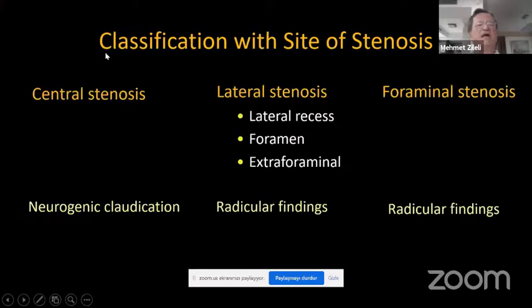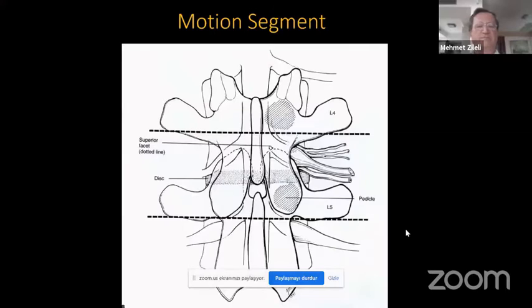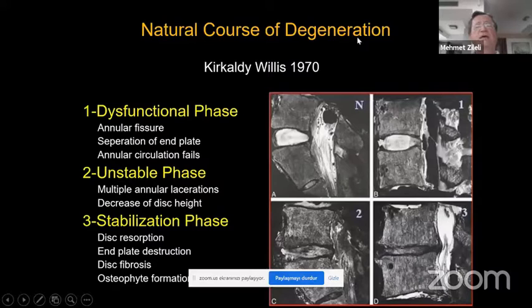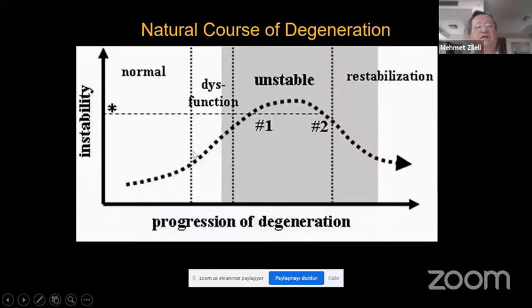There are anatomical terms like central stenosis, lateral or foraminal stenosis. The most common level is L4-5, then L3-4, then L2-3, and L5-S1, quite less common. The motion segment — the disk space, adjacent end plates, and two facet joints — compose the motion segment. Looking at degeneration phases described by Kirkaldy-Willis, there are mainly three: dysfunctional phase, unstable phase, and stabilization phase.